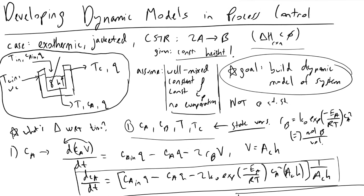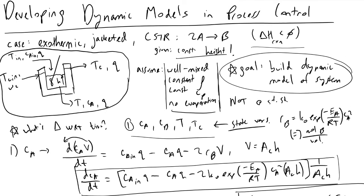So we were able to arrive at four equations that tell us how our exothermic CSTR is evolving with time. This is the first step in a process control class. The next thing we'll do is put these into state space and perform Laplace transforms, which will allow us to build process transfer functions so we can actually begin to make feedback controllers to control these kinds of processes. I hope you find it useful — let me know if you have any questions, and thanks for watching.